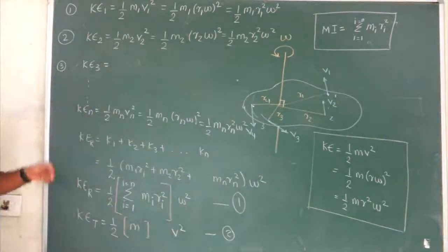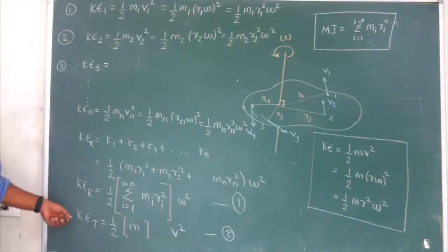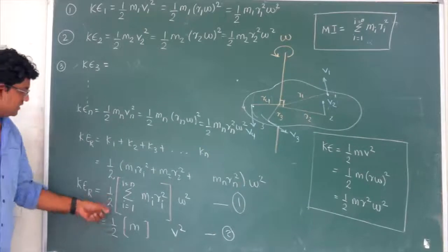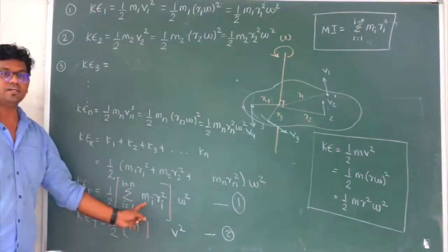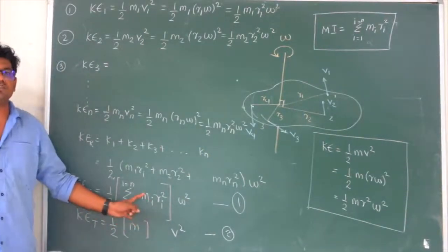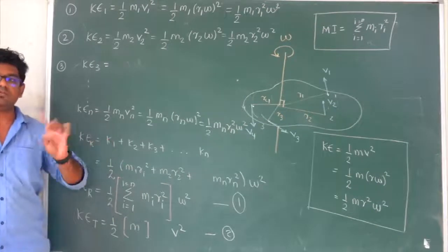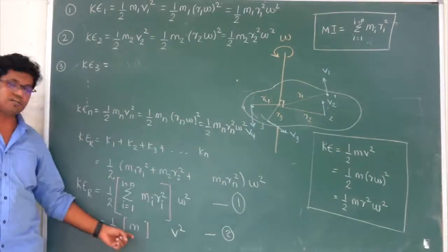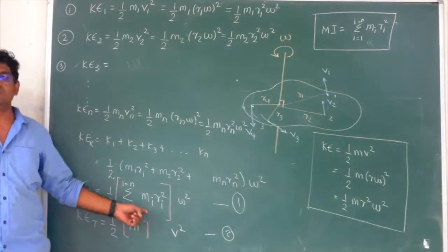Comparing with translational motion: half is analogous, V is analogous to omega, and mass M — which means inertia in translation — is analogous to summation MiRi squared in rotation. So the summation MiRi squared is the inertia in rotational motion.